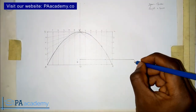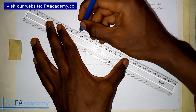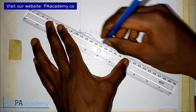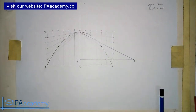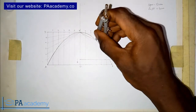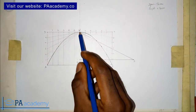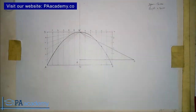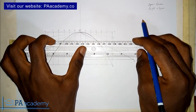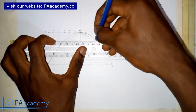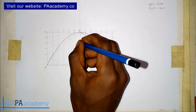Let's call the end of that perpendicular line point F. What you are going to do now is to join point F to point V. Now, look at where this line from F is touching the parabola itself. From that point on the parabola, draw a straight line that comes and touches line VE. Where it touches line VE — that represents our focus, point F.